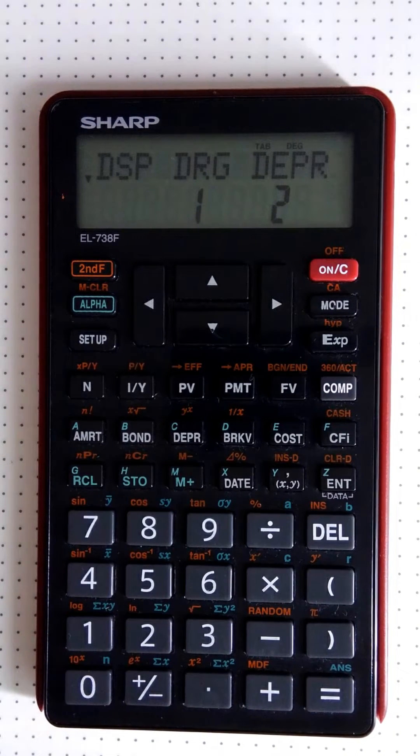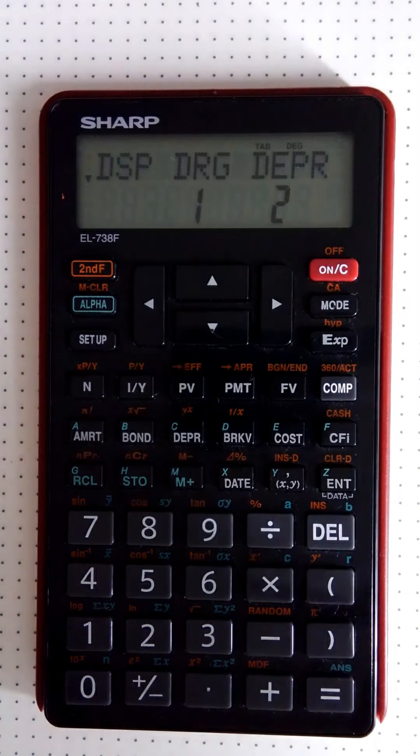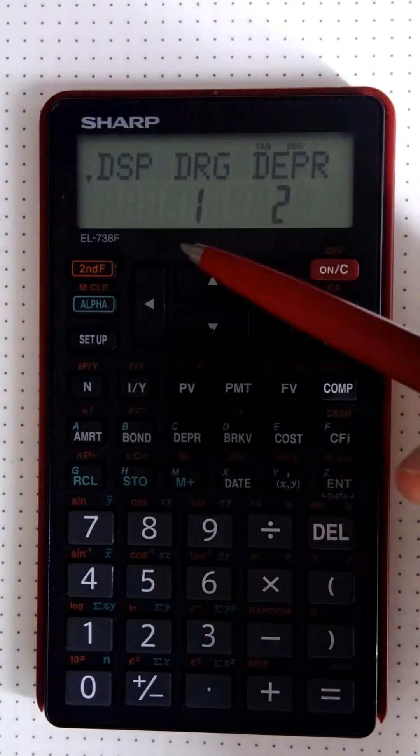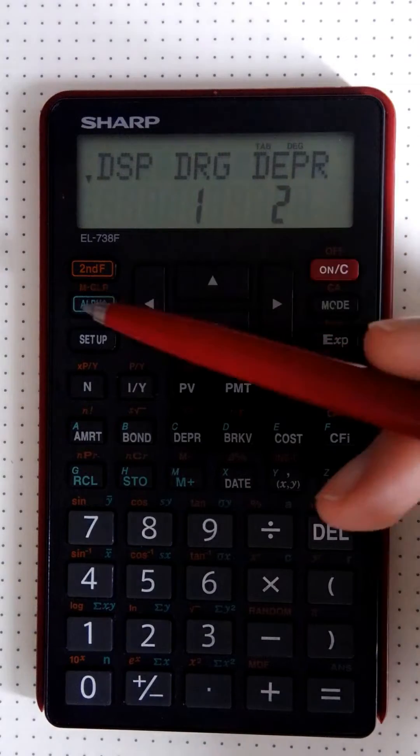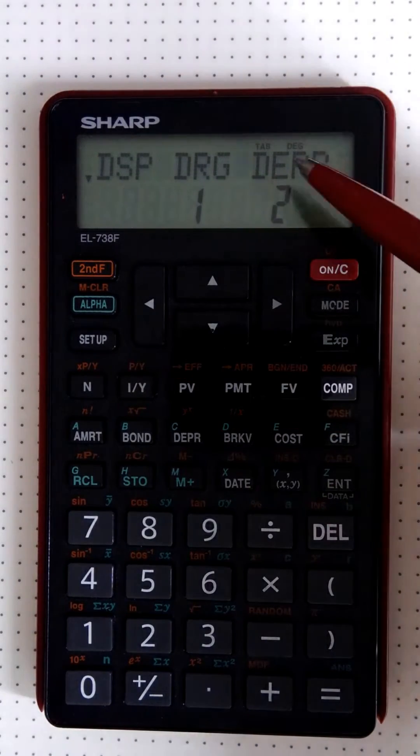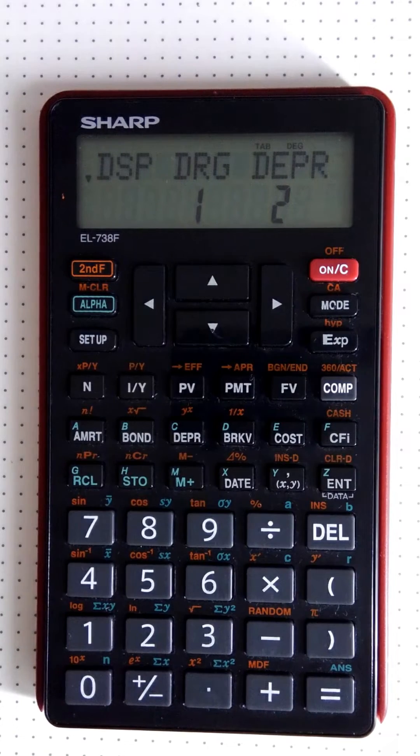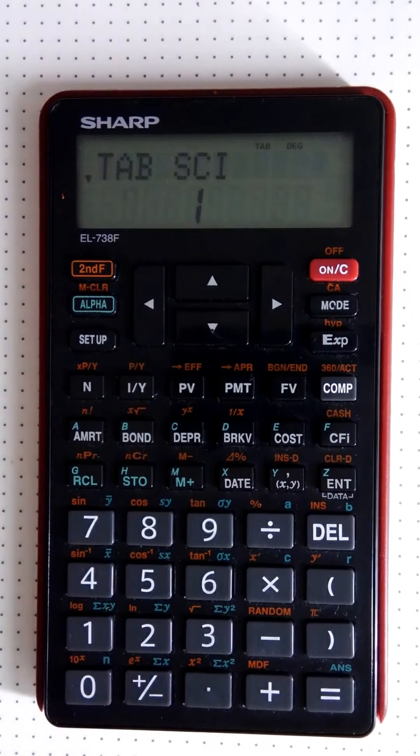We're going to push setup and it's going to give us options to change the setup of three different things: the display, which is what we're interested in, the degree (like grad or actual degree), and the depreciation. We want the display, so we're going to push zero.